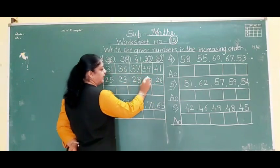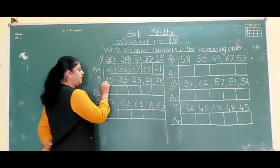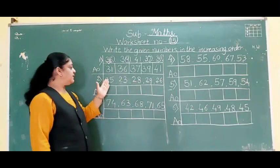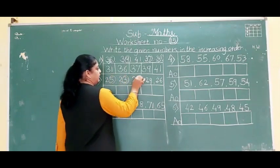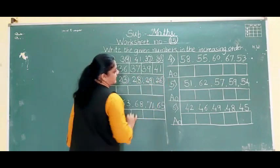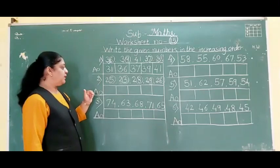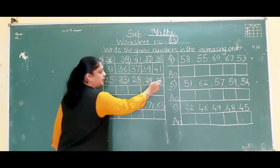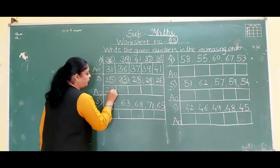Second example: 24, 23, 28, 29, 26. The first digit is 2 everywhere. We look at the second digits: 4, 3, 8, 9, 6. Which number is small? 1 is not there, 2 is not there, 3 is there — yes. So 23 will come first.